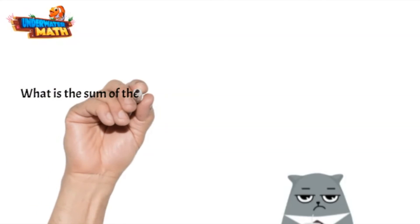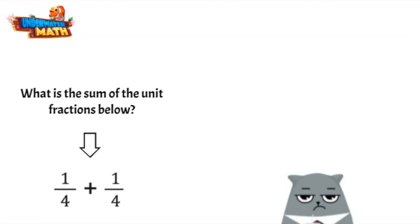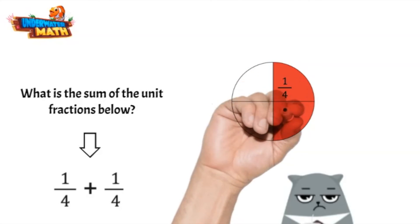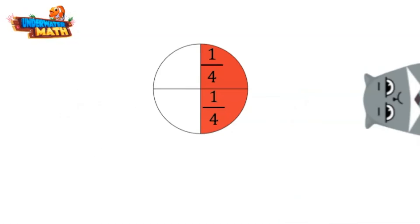Let's compose a fraction now. What is the sum of the unit fractions below? One-fourth plus one-fourth. Let's use a model to help us. We have a circle divided into fourths and each part represents one-fourth. Since we are adding two one-fourths together, two parts of the model are shaded. If we add the numerators we get two.